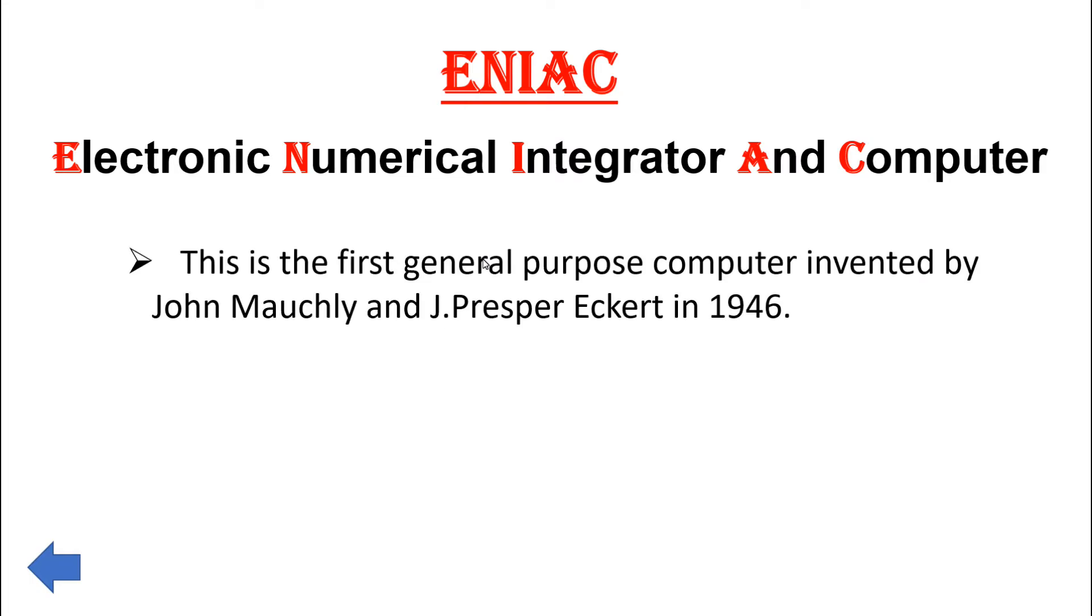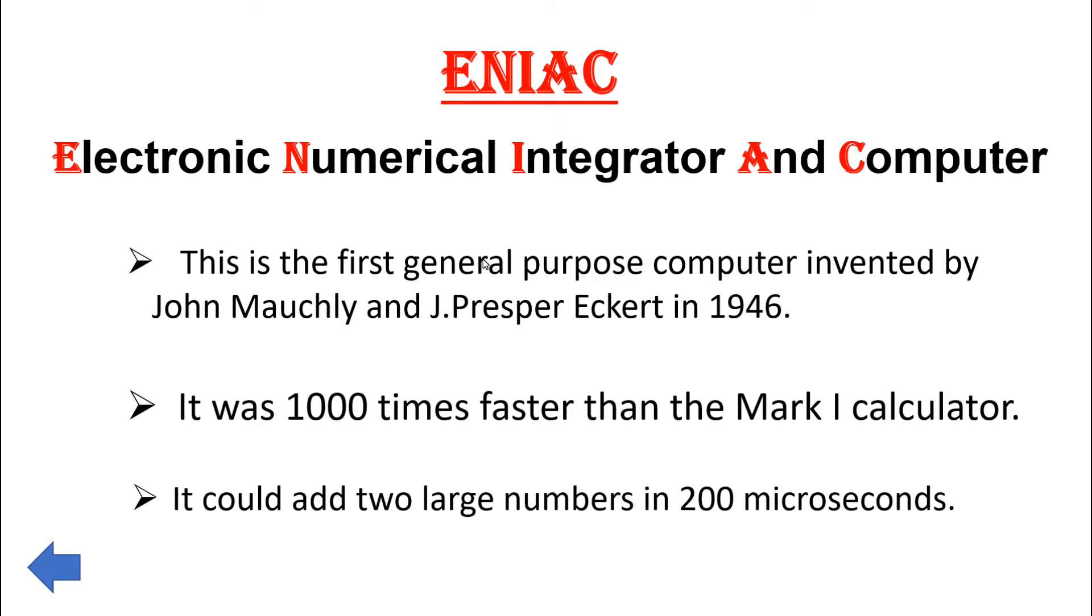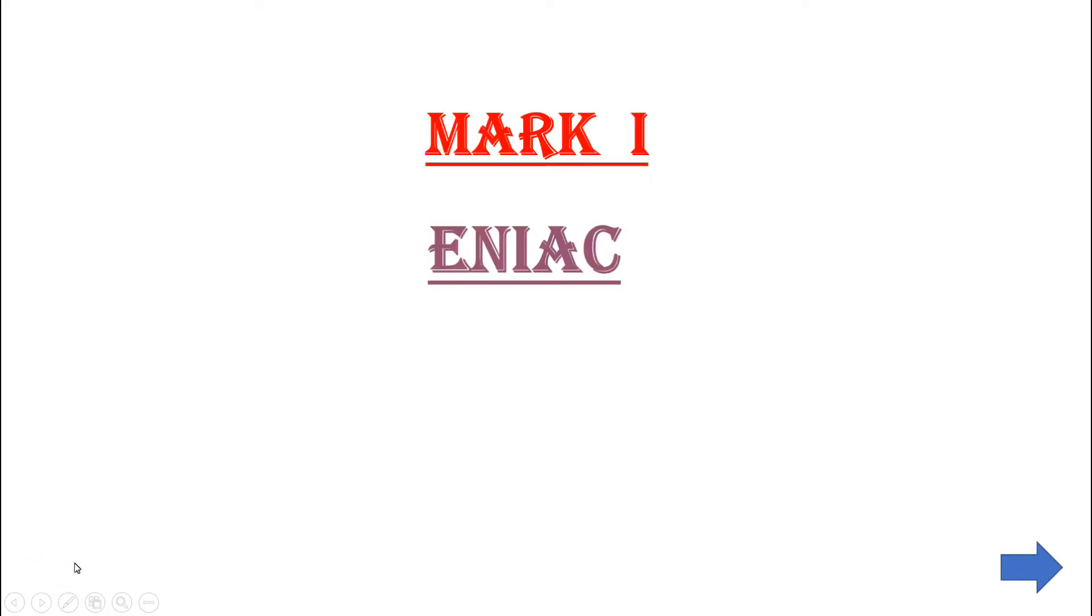first general-purpose computer, invented by John Mauchly and J. Presper Eckert in 1946. It was a thousand times faster than Mark 1 calculator. It could add two large numbers in 200 microseconds. The next computer system invented after ENIAC is